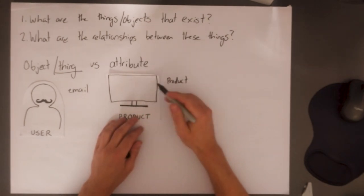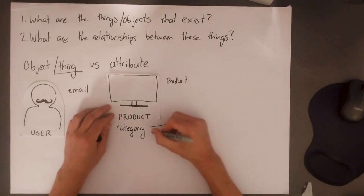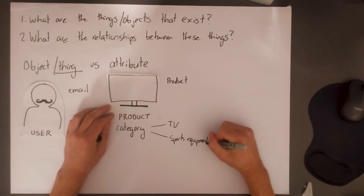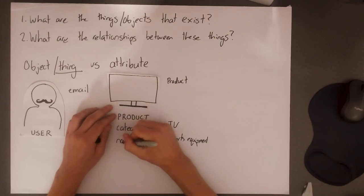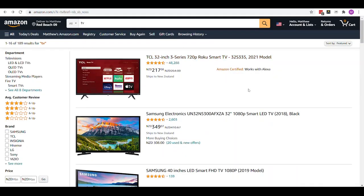Just like when playing God and creating animals — there's mammals, reptiles, fish — it's the same concept when defining things in your database. So I would have a Product thing with a category field (which might be TV or sports equipment), and a name field corresponding to the actual product name, like 'TCL 32 inch.' That's the idea of distinguishing between attributes and things.